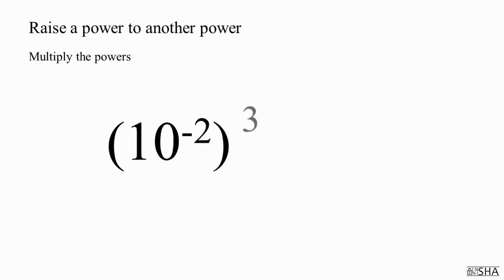Raise ten to the minus second to the third power. We rewrite ten. We multiply negative two by three, we get negative six. The answer is ten to the negative sixth power.